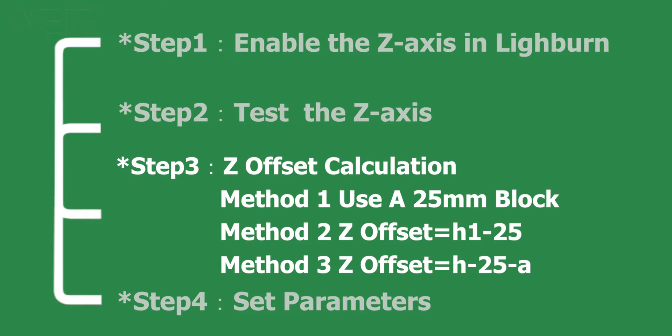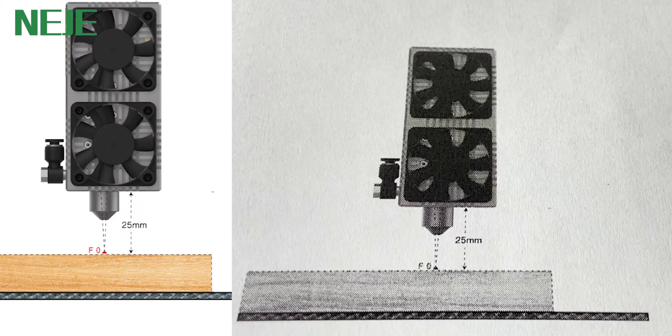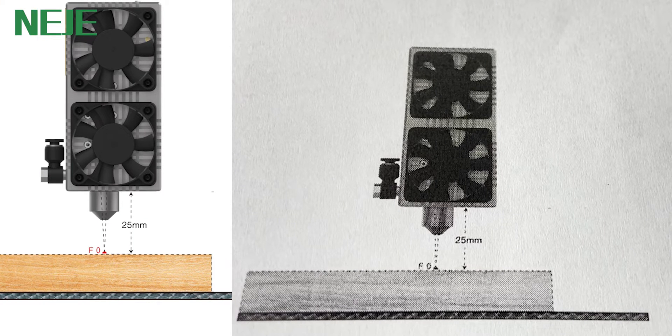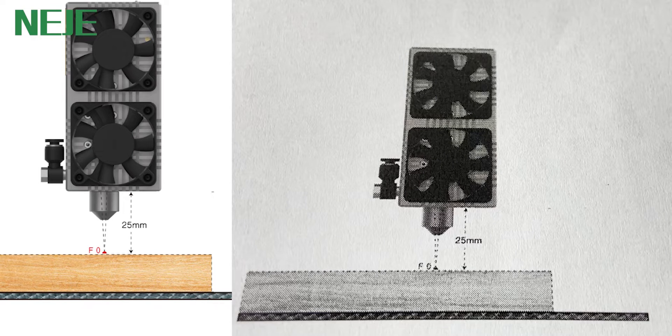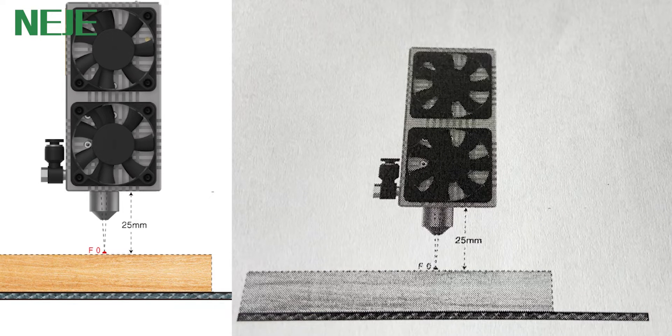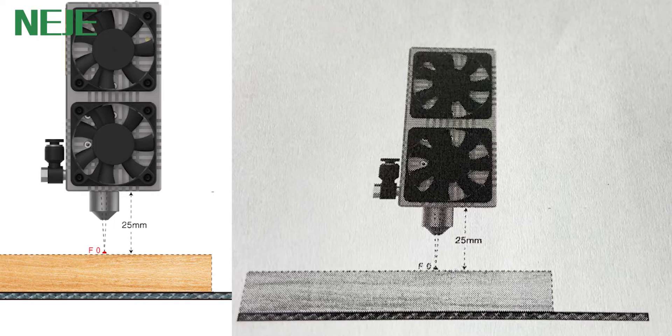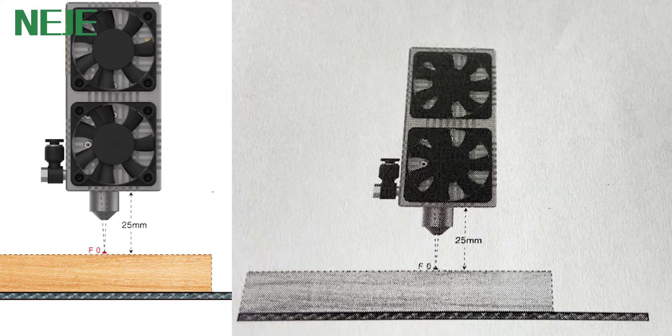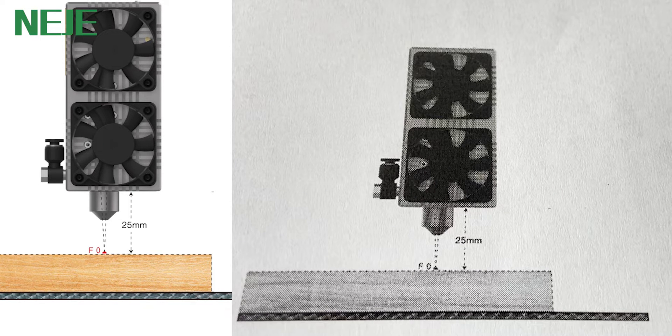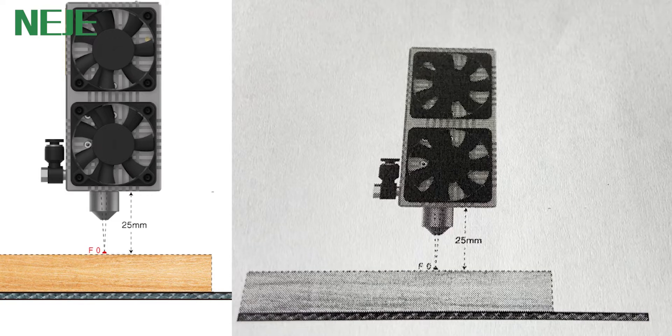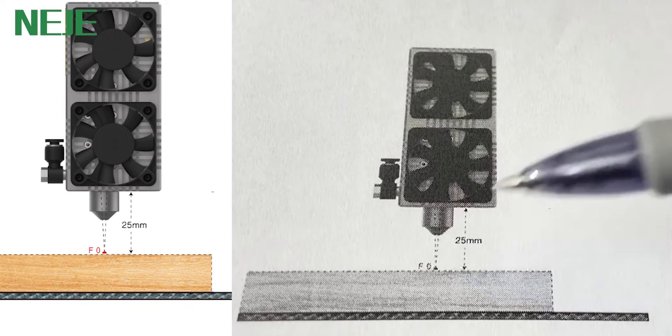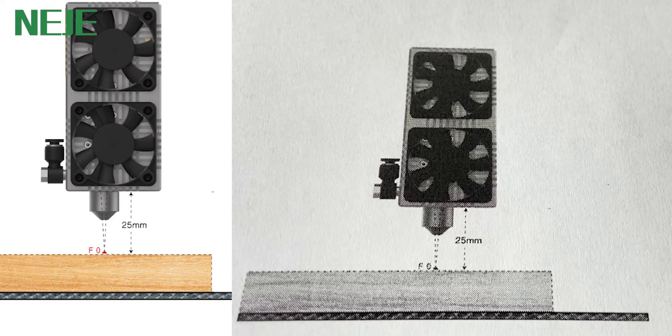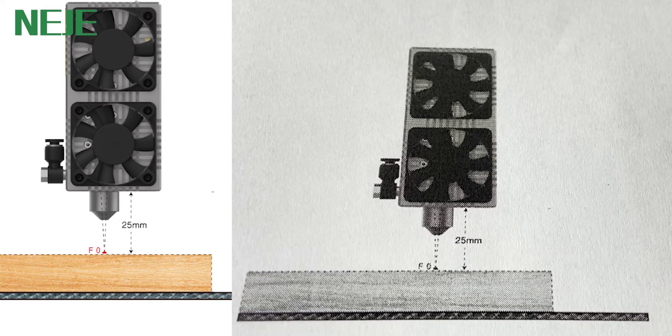Step 3: Z-offset calculation. There will be three ways for you to adjust the height of the module before you start to engrave or cut. This will be the first method, suggested for beginners. Our goal is to make sure that the focal point of the laser module is on the surface of the material before you're going to engrave or cut through a material.